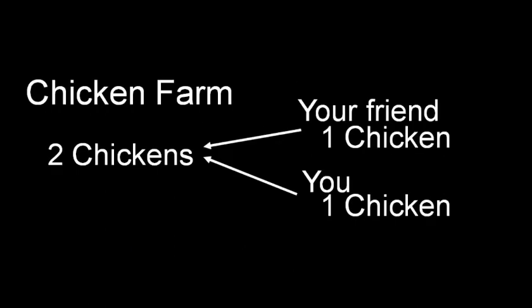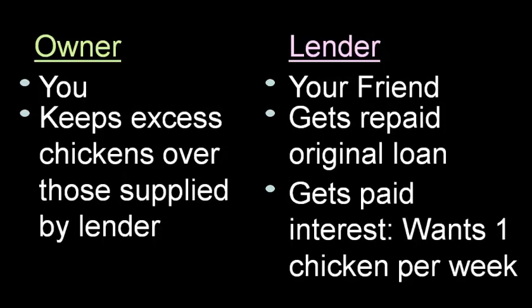Let's say that you're on a remote island that doesn't have money, and the currency is chickens. So that means you buy stuff and you pay for it with chickens. You want to start a chicken farm, but you only have one chicken. However, you do have a friend who has a chicken that she will lend to you. She doesn't want to be a part owner, but she would prefer to just lend it to you. So now you've got two chickens — one from your friend and one from you. You're the owner of the business, and we'll color that green. You get to keep all excess chickens over those supplied by the lender.